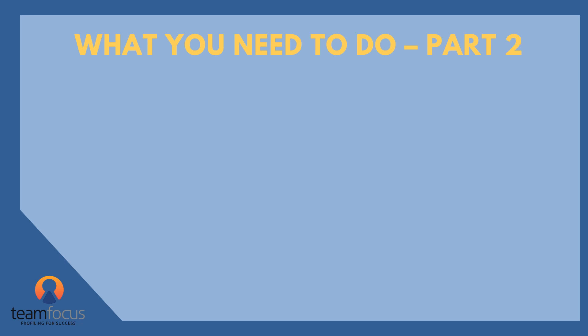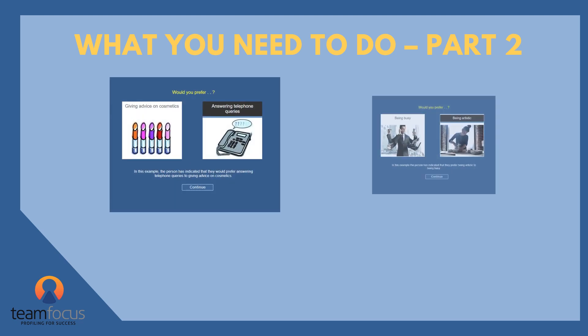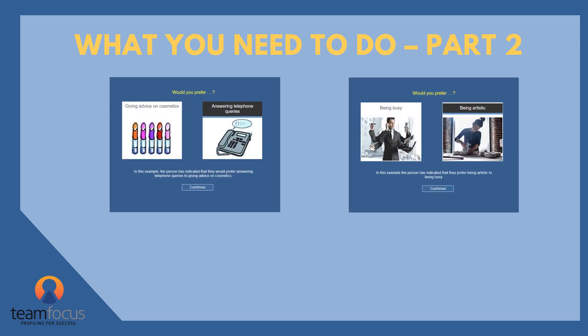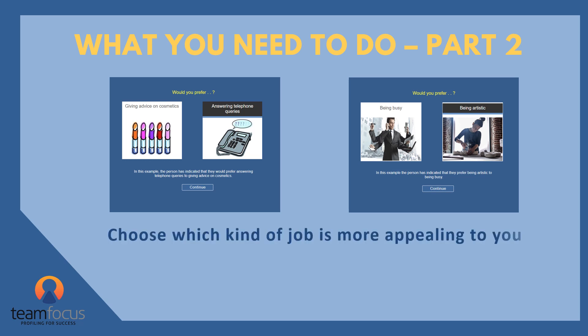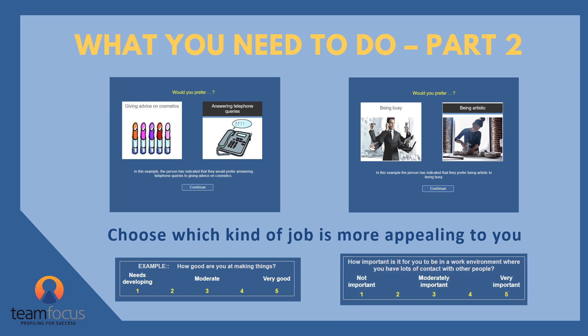You then have the next part which asks you to click on one of two pictures — like this one or this one — indicating which of the two jobs is more appealing to you. The final part then asks you 24 questions on how good you are at different activities, and 18 questions on how important these things are to you.